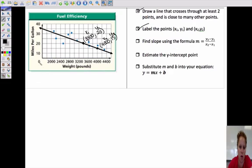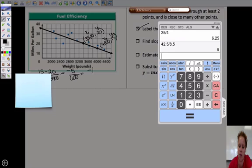Then we need to find our slope. So our y2 is 15 minus our y1 is 20, and our x2 is 4,000 minus our x1 is 3,400. So that's negative 5 over, this would be 600.